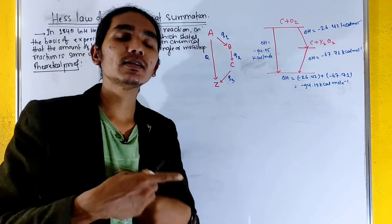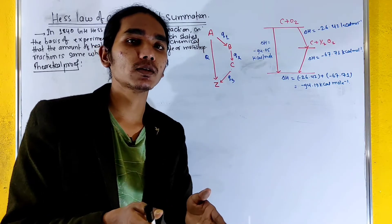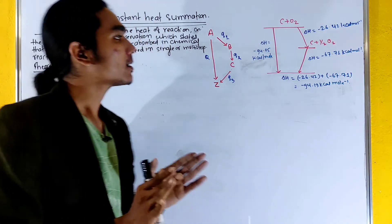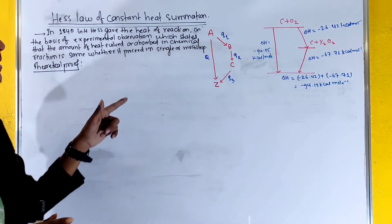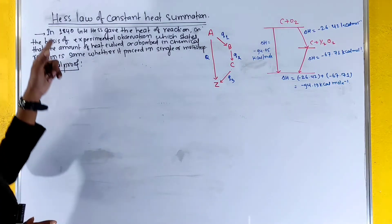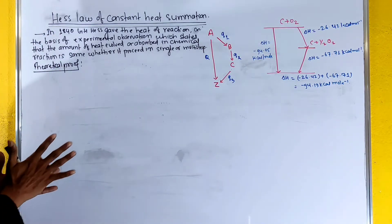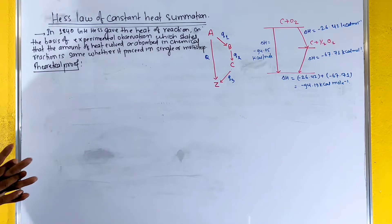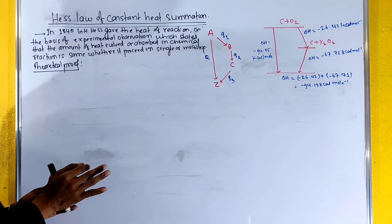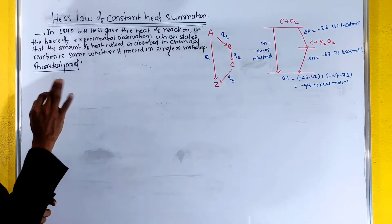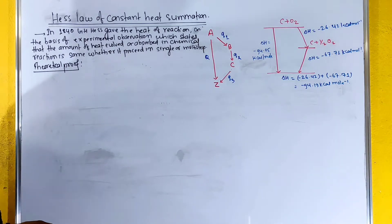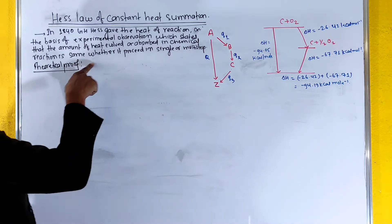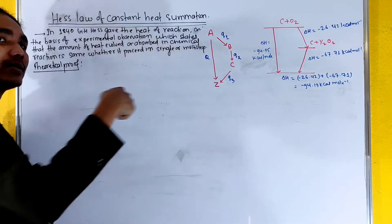In multiple steps or single steps, there is absorption and evolution of heat. We will add the heat of reaction on the basis of experimental observation, which states that the amount of heat evolved or absorbed in a chemical reaction is the same, whether it proceeds in single or multi-step reaction.